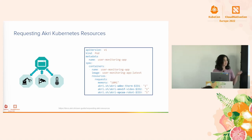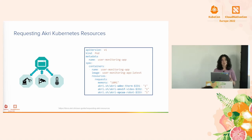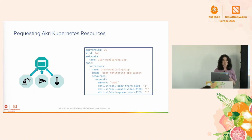Currently Akri discovers devices via discovery handlers. We have support for three protocols: Udev for devices in the local Linux device file system, ONVIF for IP cameras, and OPC UA for industrial machinery. Our discovery handler interface is a simple gRPC interface, so you can implement it in any language for any protocol you choose — even proprietary. Community members are working on ZeroConf for mDNS-based discovery, CoAP for more constrained environments, and we're having discussions around Bluetooth and MQTT, which are also very popular on the edge. Adding a discovery handler to Akri basically extends Kubernetes to declare and request a new set of IoT devices.